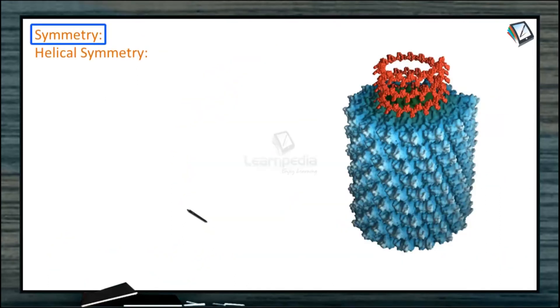Now this is symmetry. Symmetry of viruses. Helical symmetry. This is the image of tobacco mosaic virus. Look at the genetic material. It is spirally coiled, and also the capsomeres are spirally arranged. So this symmetry is called helical symmetry.